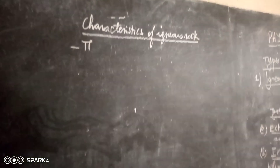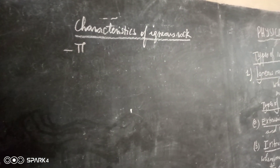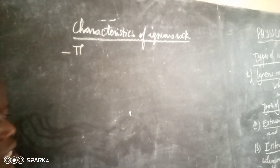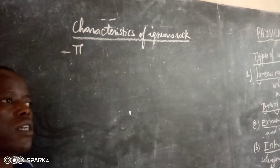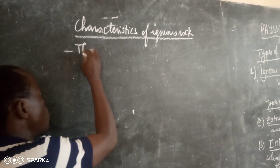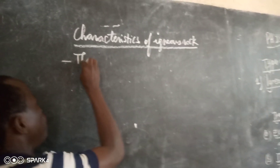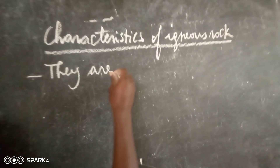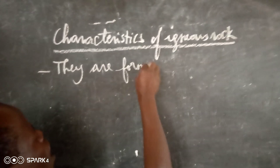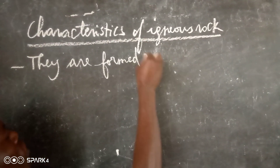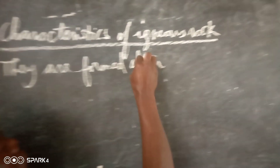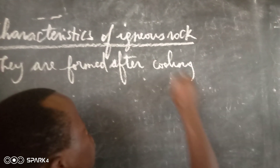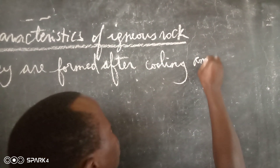Today, we are going to talk about different characteristics of igneous rock. What characterizes igneous rock? Number one, igneous rocks are formed after cooling and solidification of magma.